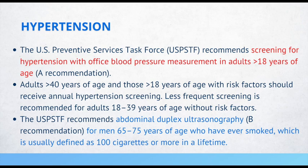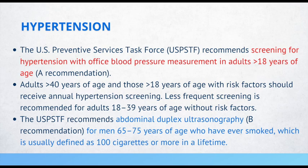Hypertension: the USPSTF recommends screening for hypertension with office blood pressure measurements in adults older than 18 years. Adults older than 40 and those over 18 with risk factors should receive annual hypertension screening; less frequent screening is recommended for adults 18 to 39 without risk factors. The USPSTF also recommends abdominal duplex ultrasound for men 65 to 75 years of age who have ever smoked, generally defined as 100 cigarettes or more in a lifetime.